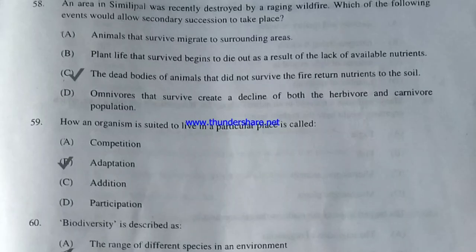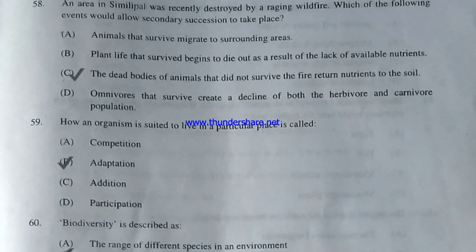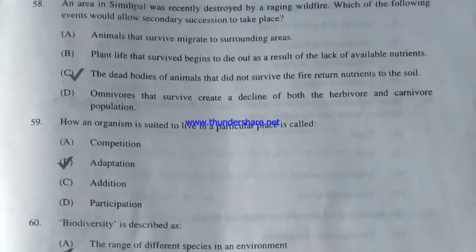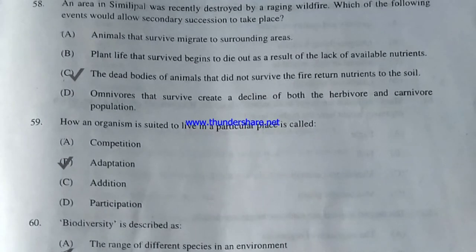An area in Simlipal was recently destroyed by a wildfire. Which event would allow secondary succession to take place — animals that survive migrate away; plant life that survived begins to die from lack of nutrients; dead bodies of animals return nutrients to the soil; or omnivores that survive create a decline in herbivore and carnivore populations? The correct answer is C — the dead bodies of animals that did not survive the fire return nutrients to the soil.